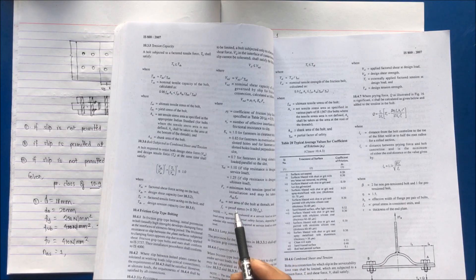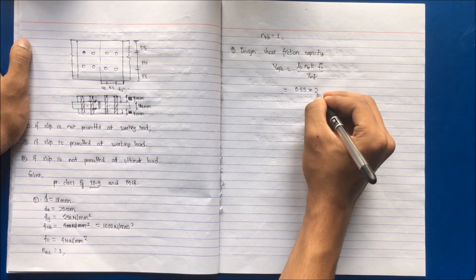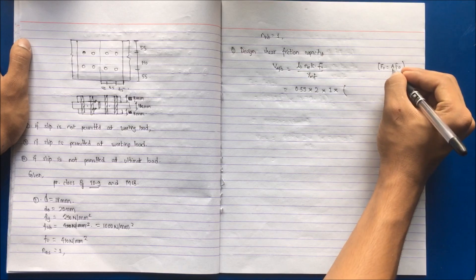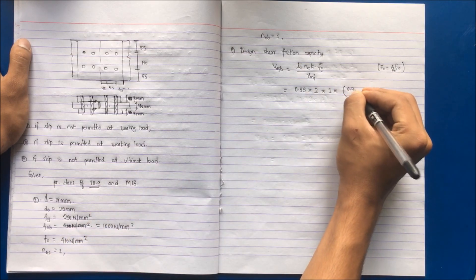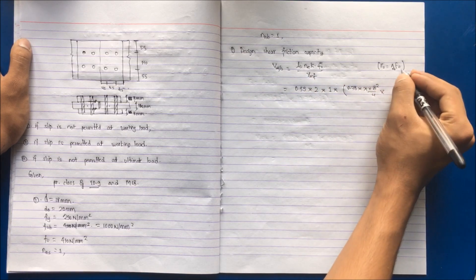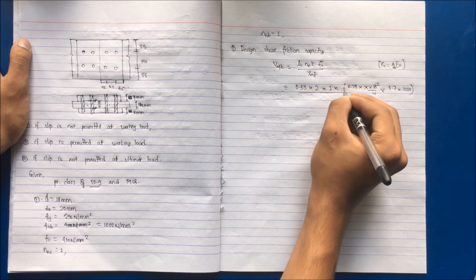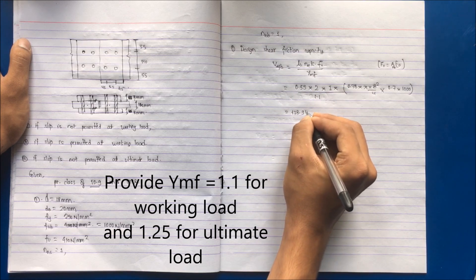F_not is given by Anb × F_not, where Anb is the net area of the bolt and F_not is the proof stress taken as 70% of the ultimate tensile stress of the bolt. So μF = 0.55, NE = 2, KH = 1. The net area of the threaded part is 0.78 × π × d² / 4, with d = 18 mm, and F_not = 70% of FUB. With γMF = 1.10, this value comes to be 138.94 kN.